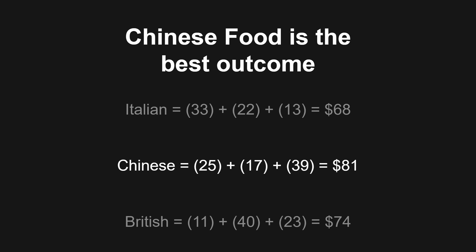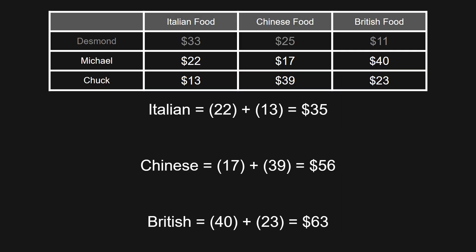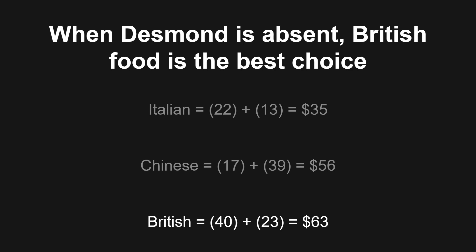Now let's calculate each person's payment under the VCG mechanism. Recall that the VCG mechanism imposes a payment on each agent in a way that encourages them to bid truthfully. The payment equals the total welfare of the other agents when that specific agent is present, minus the total welfare of the other agents under the outcome we would have selected if that agent was absent. To find the outcome we would select without Desmond, we just calculate the sum of values but ignore Desmond's value for each option. We find that when Desmond is absent, British food would be the best outcome, yielding a social welfare of $63.